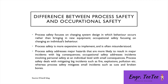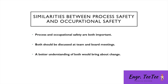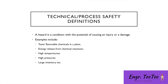Process safety tends to involve big consequences and major incidents, while occupational safety operates at an individual level with relatively smaller consequences — cuts and broken bones, which are serious, but compare differently to explosions, pollution, and fires. Both aspects of safety are important and should be discussed at team and board level.